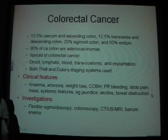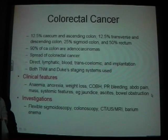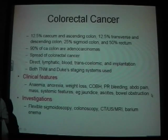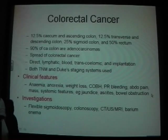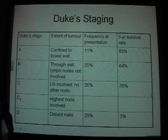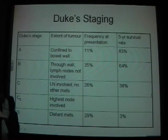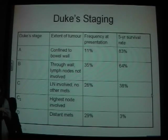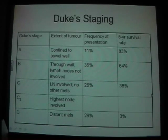Investigations include screening, and depending on risk level, flexible sigmoidoscopy, colonoscopy, and imaging including CT and barium enema. Duke staging is used — it's quite common and comes up in exams — based on the extent of the tumour, giving a five-year survival rate.